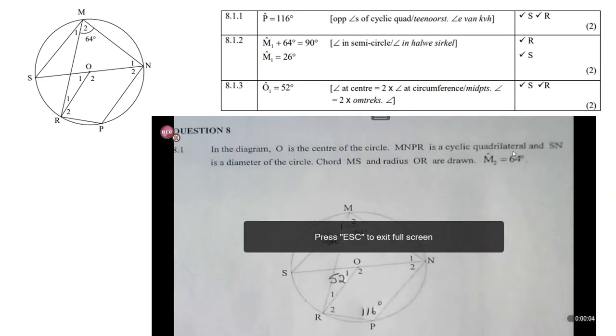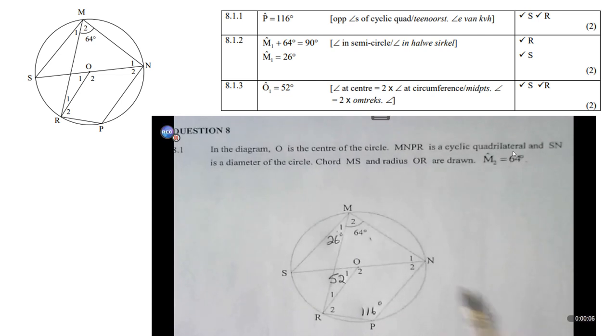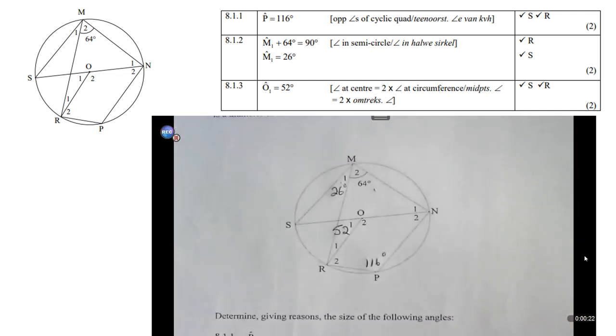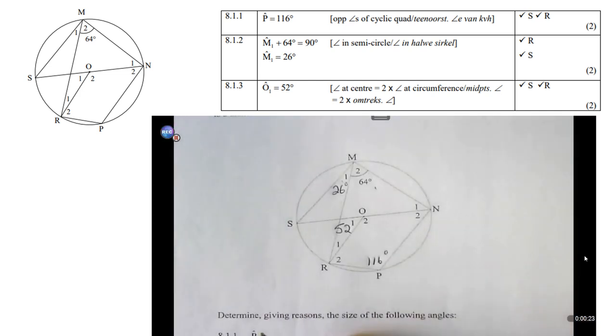In the diagram, O is the center of the circle, MNPR is the cyclic quadrilateral, and SN is the diameter of the circle. Chord MS and radius OR is drawn. M2 is 64 degrees. Now, the first question is, you must determine the size of angle P.